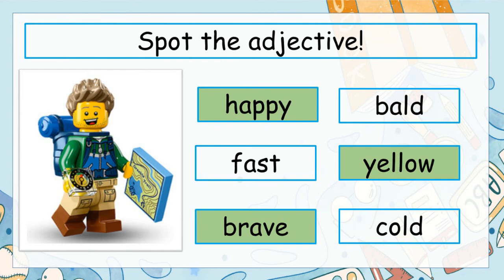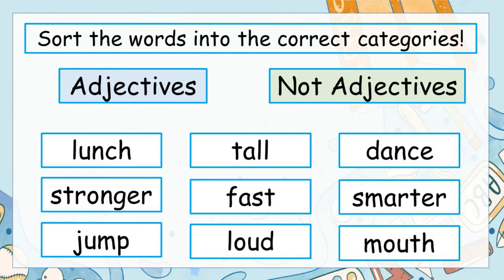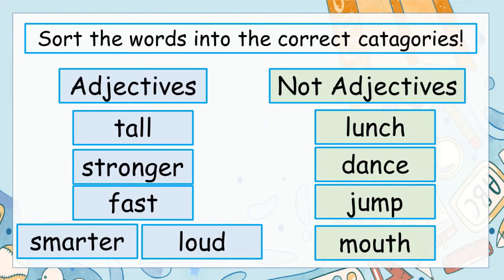Remember, an adjective describes a noun and gives us more details about it. Take a look at this list of nine words — some are adjectives and some are not. Pause the video and sort the words into the correct category. There were five adjectives in that list: tall, stronger, fast, smarter, and loud. The words lunch, dance, jump, and mouth are not adjectives — they don't describe nouns.